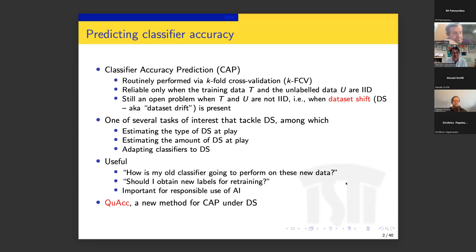This talk will be about predicting classifier accuracy in the wild, and will introduce a method we have recently developed for doing classifier accuracy prediction under dataset shift — a method we have called QUAC.